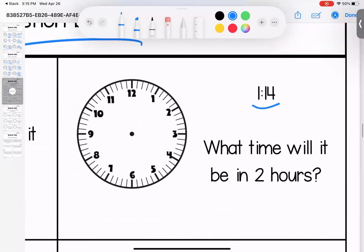What time is it? It's 1:14. So we're going to do 1:14. What time will it be in two hours? It'll be 3:14.